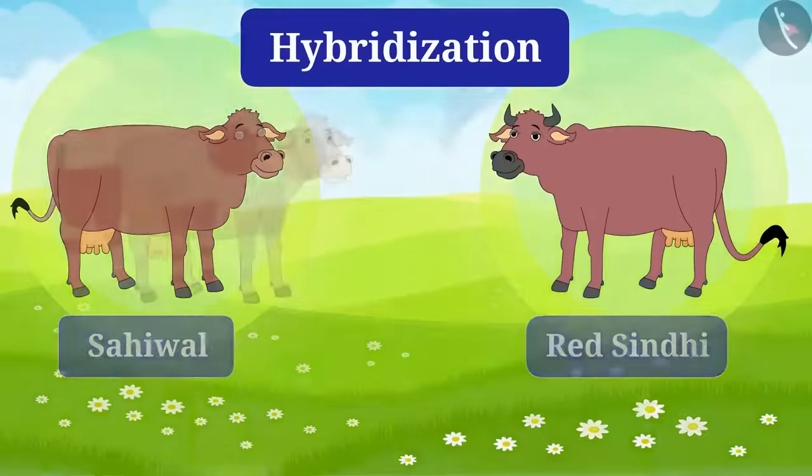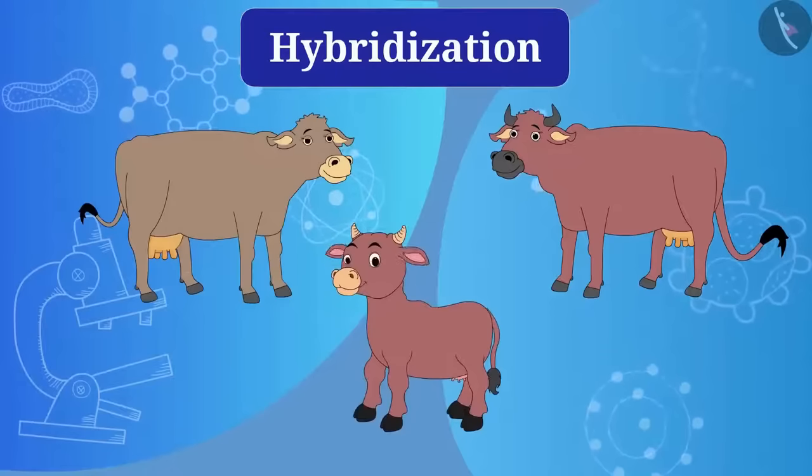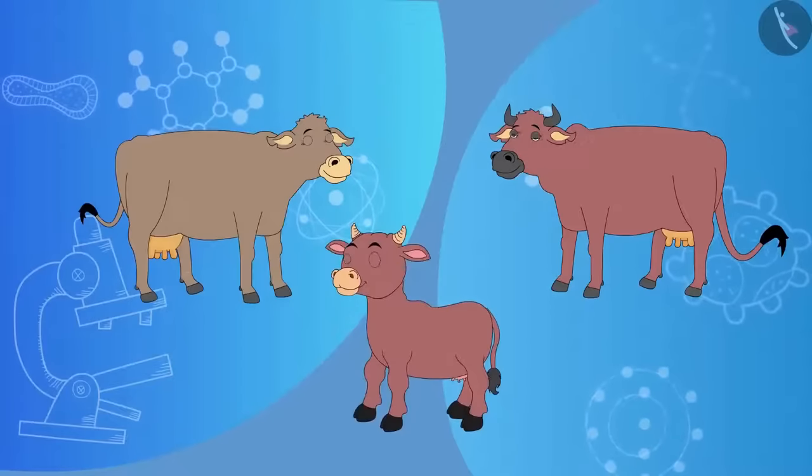If the traits of both the breeds are seen in the calf, then the calf will have both the properties. That is,